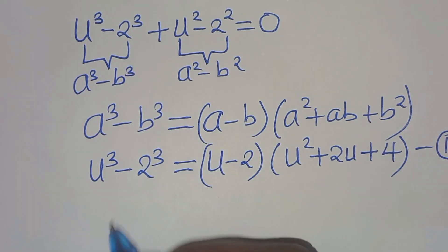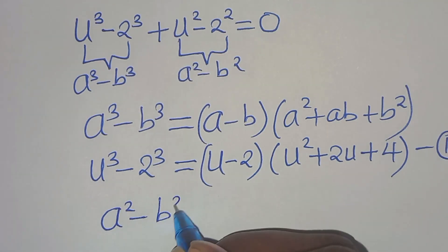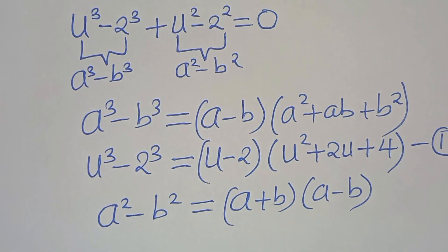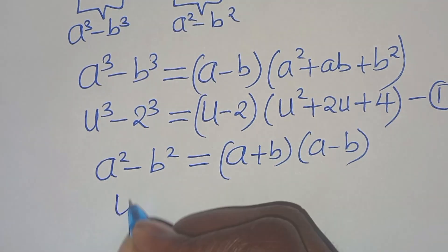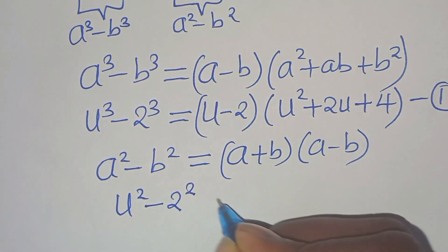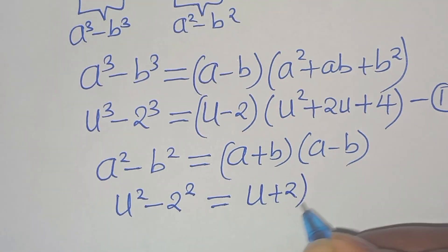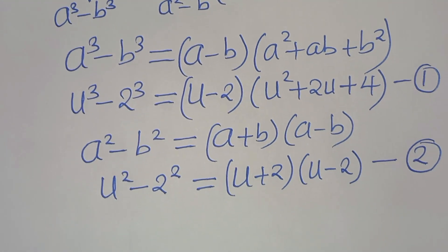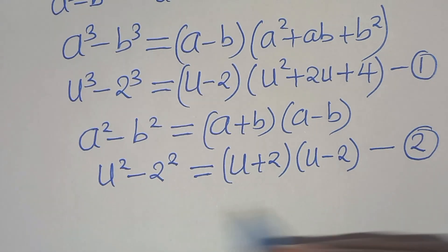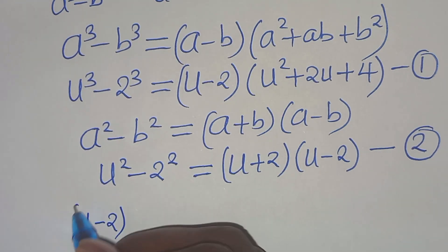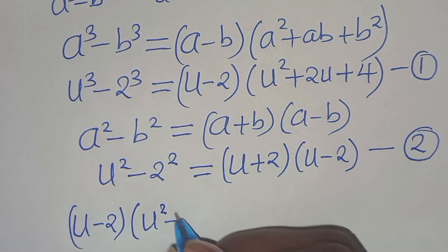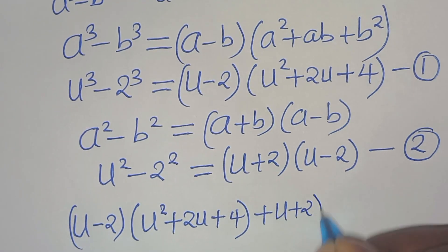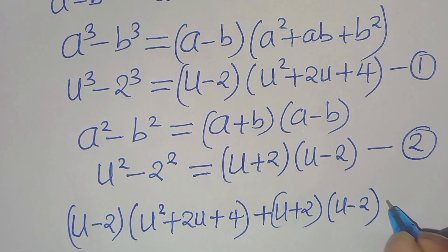The second part is u² minus 2², which is a difference of two perfect squares. Using the identity a² − b² = (a + b)(a − b), we factor u² − 2² as (u + 2)(u − 2). We call this equation 2. Combining equations 1 and 2, we have (u − 2)(u² + 2u + 4) + (u + 2)(u − 2) = 0.